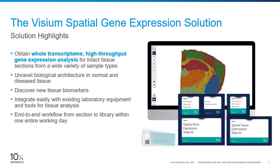With Visium, researchers can obtain whole transcriptome high-throughput gene expression analysis from the whole tissue section and from a wide variety of sample types. This solution enables researchers to unravel the biological architecture in normal and diseased tissues and discover new tissue biomarkers. Furthermore, Visium can be easily integrated into your current workflow by using existing laboratory equipment and tools for tissue analysis.